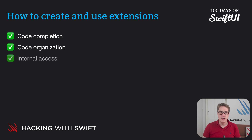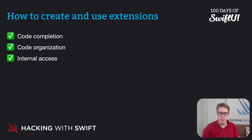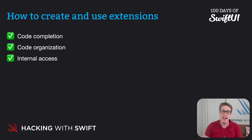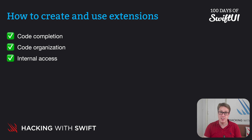Third, internal access. Because your extension methods are a full part of the original type, as if they were added there in the first place, they get full access to the type's internal data. That means they can use properties and methods with otherwise restrictive access control settings.